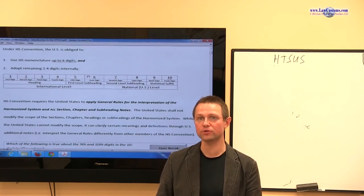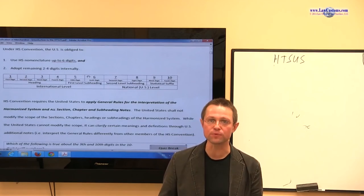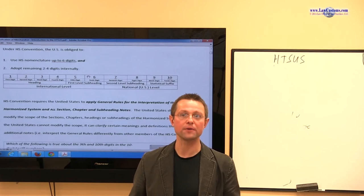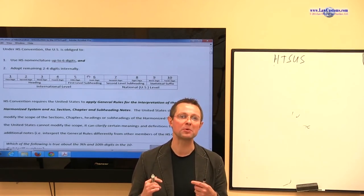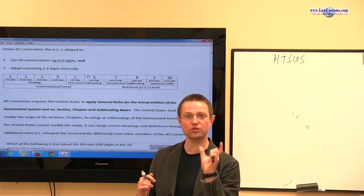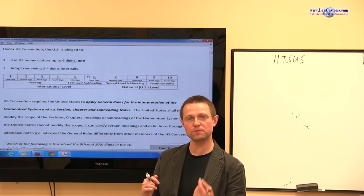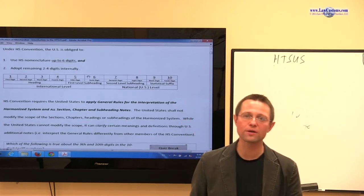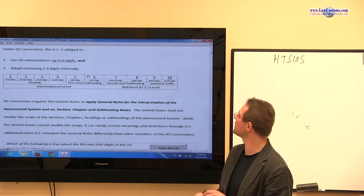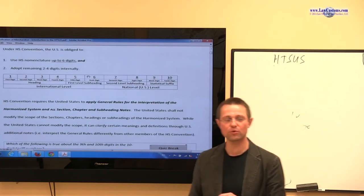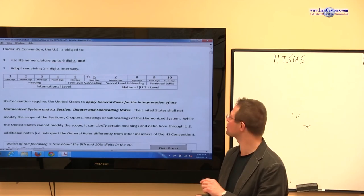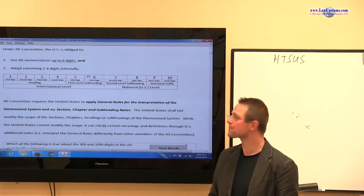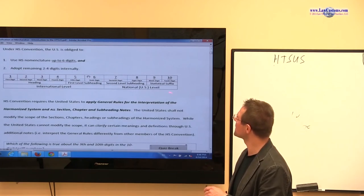And those 10 digits are the Harmonized Tariff Schedule of the United States which drive the duty, which drive the classification, and can also have other repercussions such as requirements for other government agencies such as United States Department of Agriculture. In the context of fees, for example, they determine whether the Harbor Maintenance Fee applies based on a harmonized tariff schedule. The clothing itself also bears fees such as the cotton fee if this is made out of cotton, and the amount of cotton fee charged is assessed based on those 10 numbers. So those 10 numbers are hugely important.